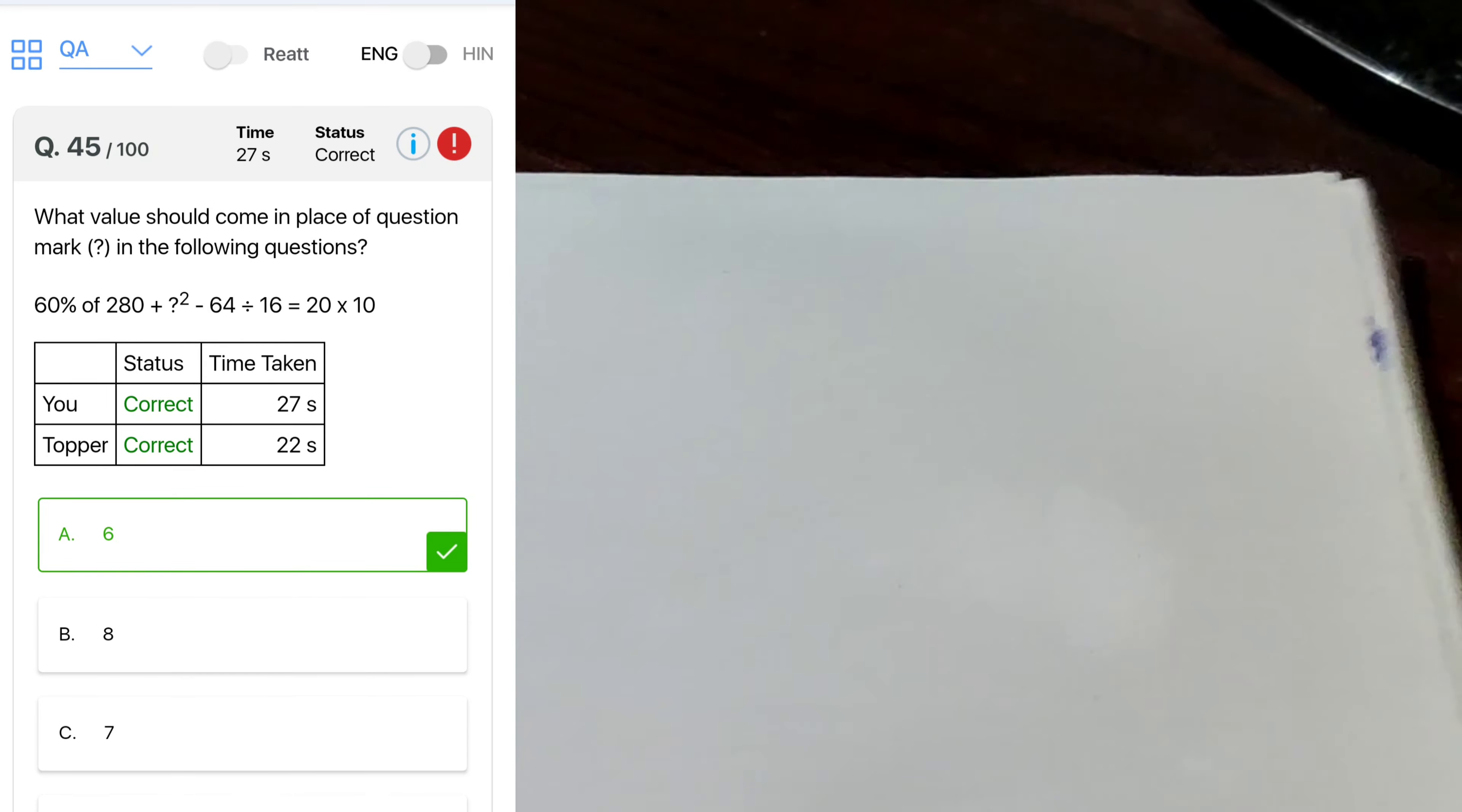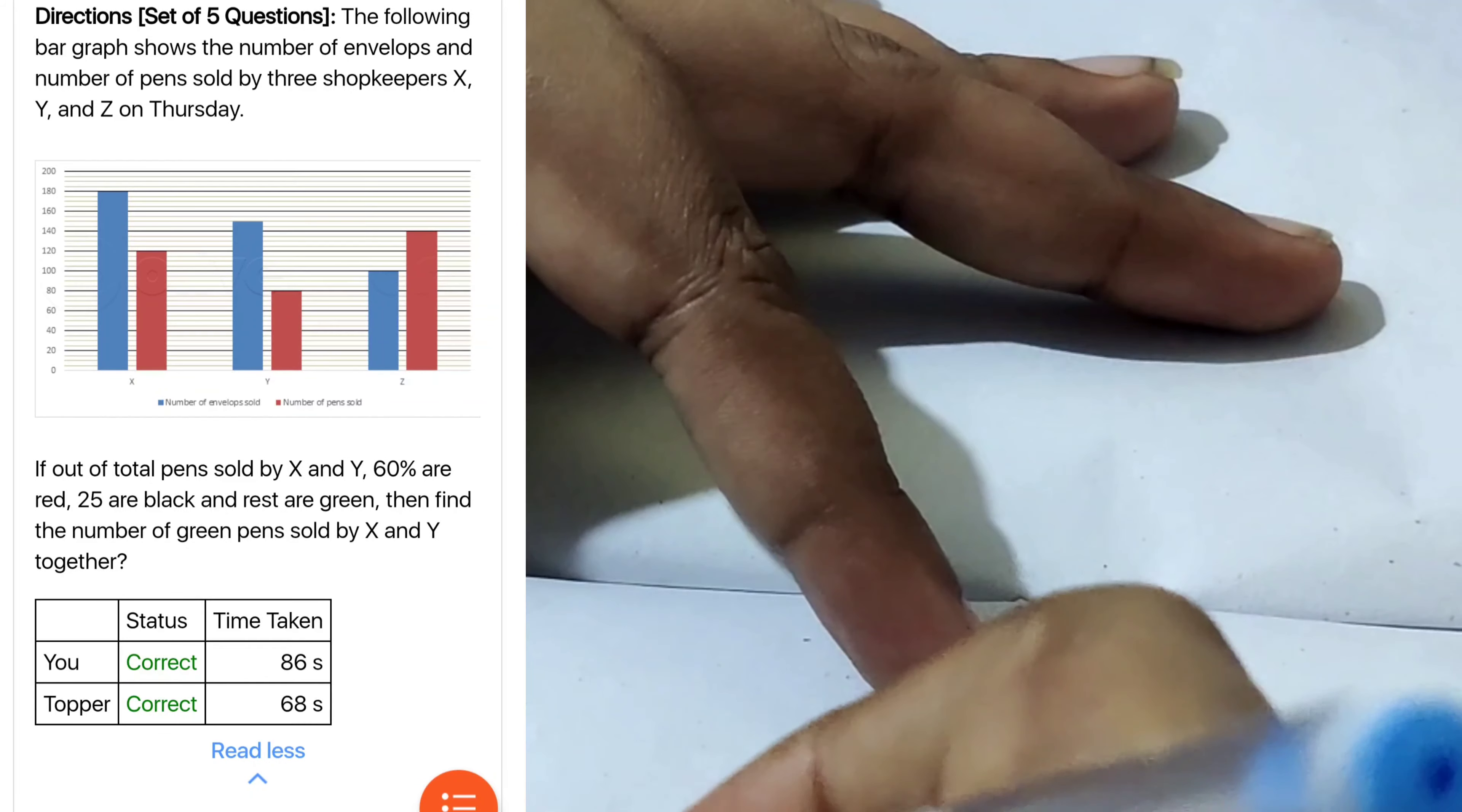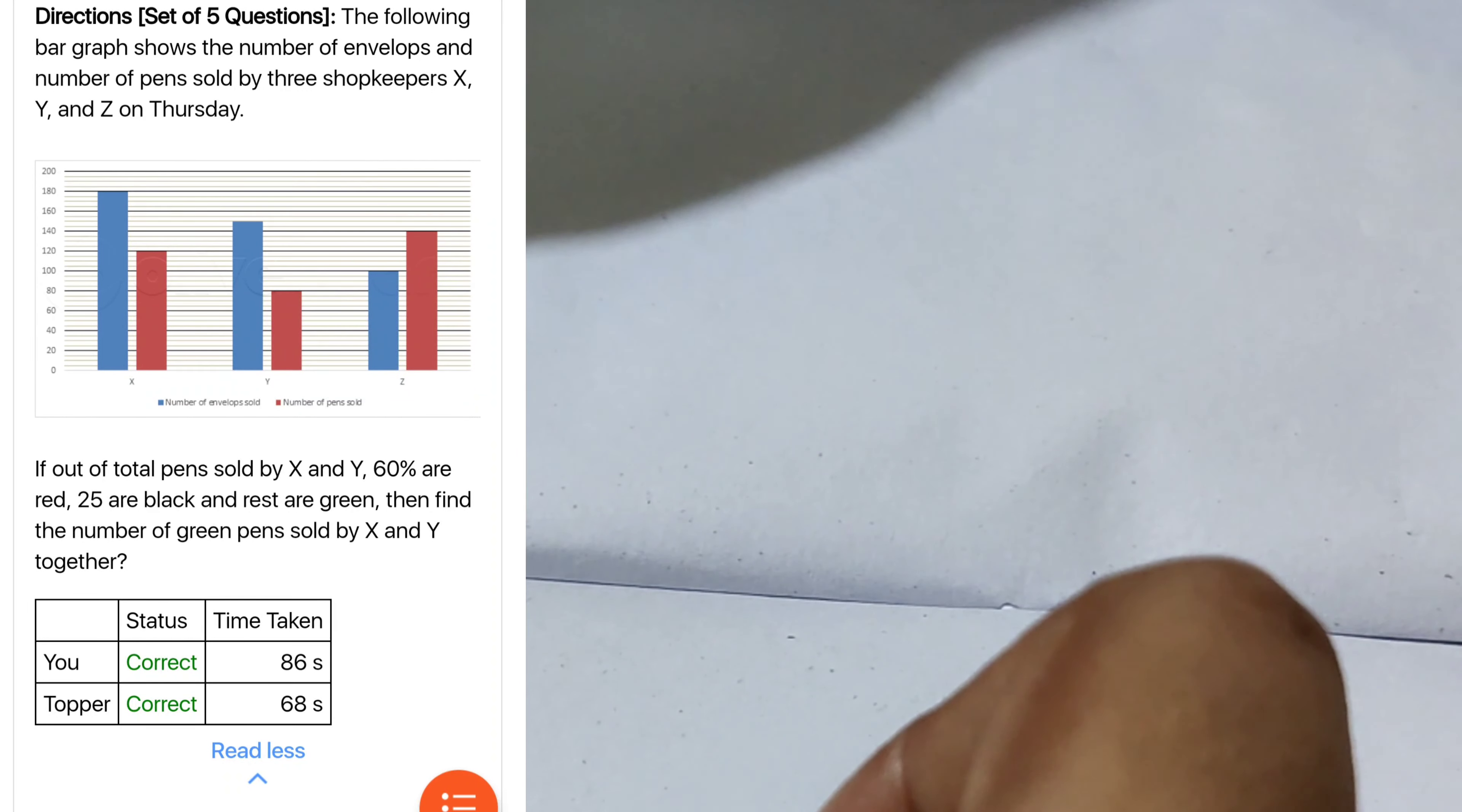Overall 15 simplifications are given in this memory based mark. Next, given DI. It consists bar graph shows the number of envelopes and number of pens of XYZ on Thursday. XYZ total envelopes and also pens. So blue indicates, it means 180, so here each line indicates 145, 145 and 150. So here in Y envelopes 150 and Z 100. So red indicates pen: 120, 80 and 140.